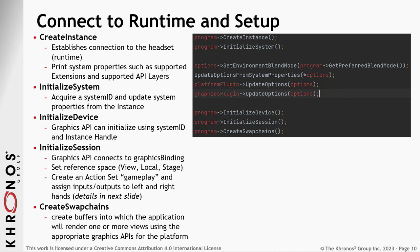From there, you initialize the session, which connects it to the graphics API, then set the reference space — view, local, or stage — as specified in the OpenXR specification. You also set up the action set, which will be described in detail, and then the swap chain, which lets you render consecutive views without screen tearing so they go back to back and produce a smooth picture.